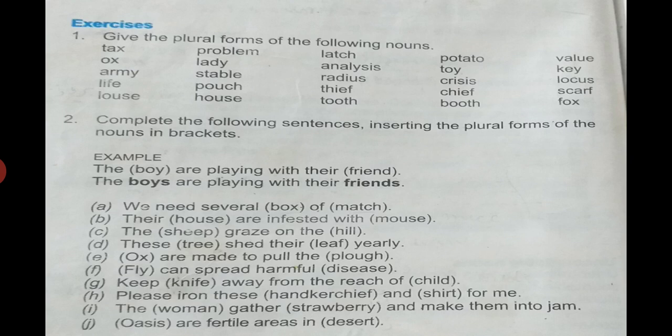Analysis, IS then ES will be replaced. Radius, US becomes single I. Thief, then EF will replace into VES. Thieves, T-H-I-E-V-E-S.